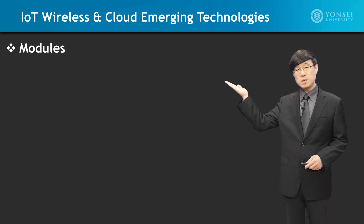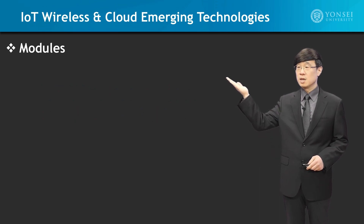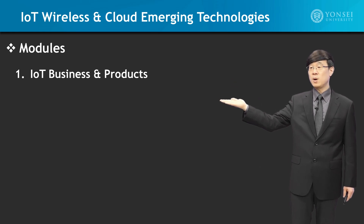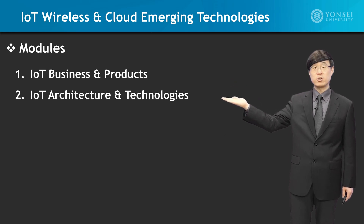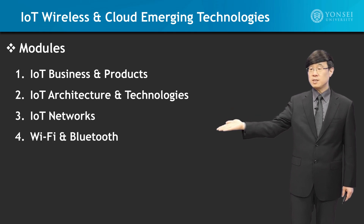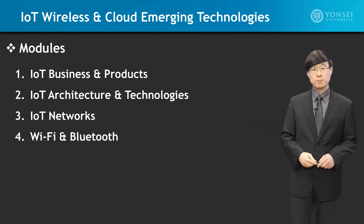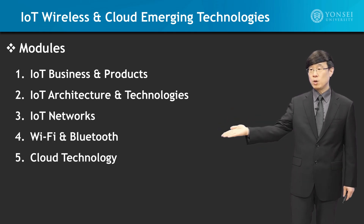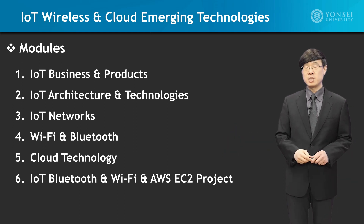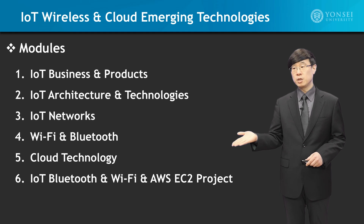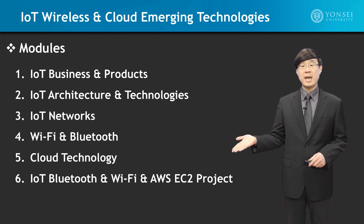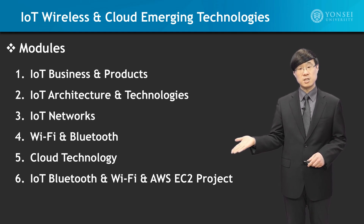The course has the following modules, starting off with IoT Business and Products, going into IoT Architecture and Technologies, then IoT Networks focusing on Wi-Fi and Bluetooth, then we will go into Cloud-based Technologies, and we will have a project that deals with IoT Bluetooth, IoT Wi-Fi, and the AWS EC2 project.